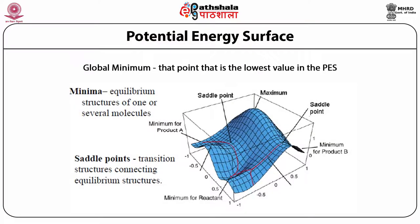Potential energy surface is basically to do with a hyperspace surface, and this hyperspace surface represents the full macromolecule or small molecular energy surface. As shown in the figure, it has some minima. These minima can be local minima, and between transitions there are features called saddle points — that is, the transition structure connecting to the equilibrium structure. The global minimum should go from the minimum of one product A to B, passing through at least one maxima and possibly many saddle points.